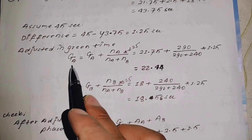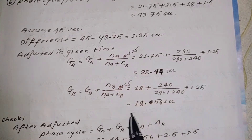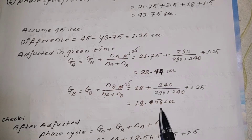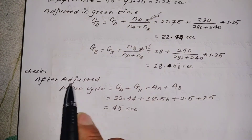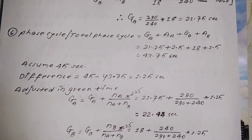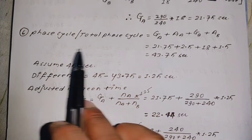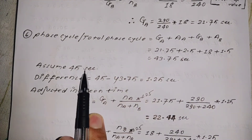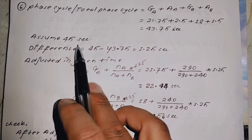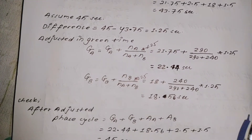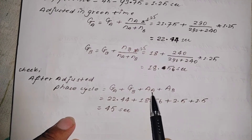After adjustment, the green times are: Road A = 22.44 seconds and Road B = 18.56 seconds. The total phase cycle length is 43.75 seconds. We assume 45 seconds as the phase cycle, giving a difference of 1.25 seconds, which is distributed proportionally to the green times.